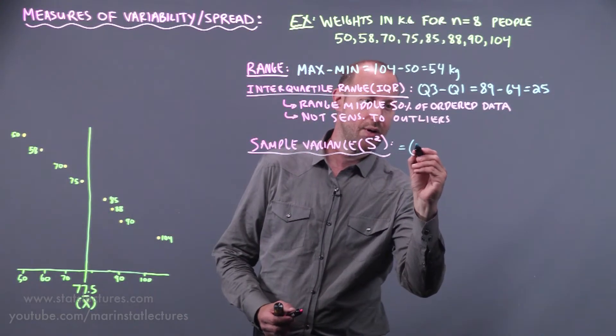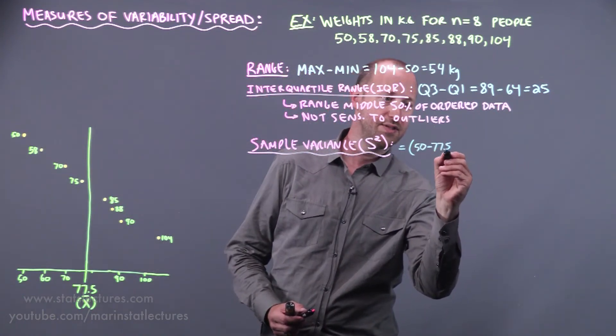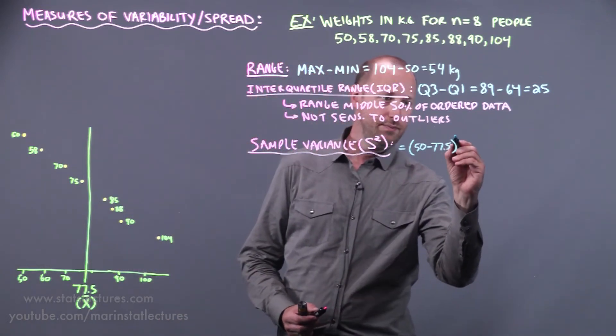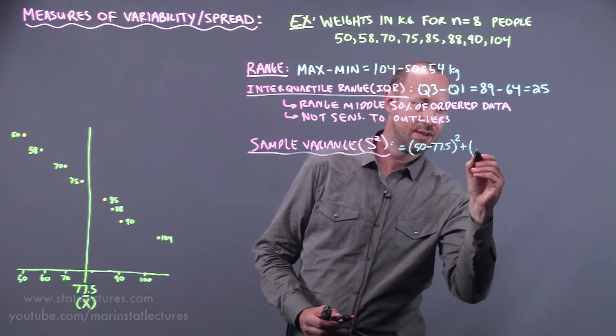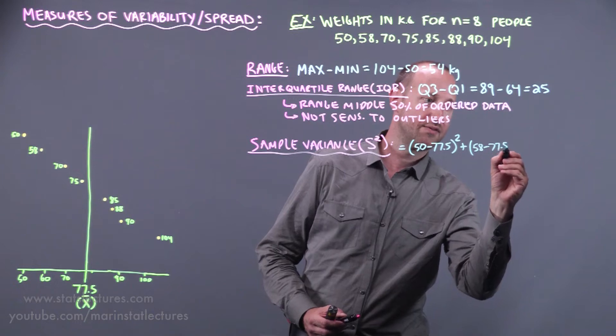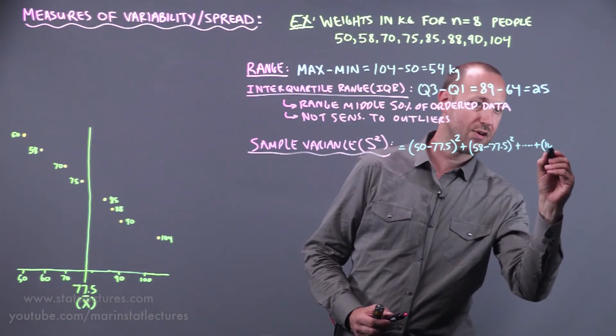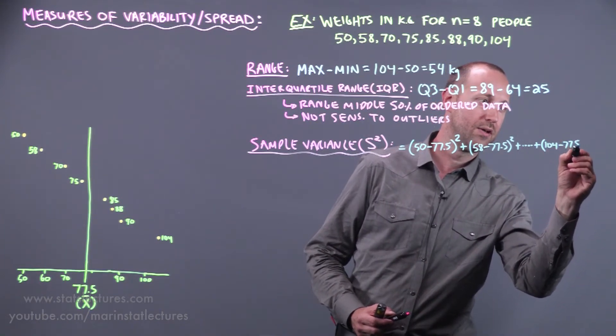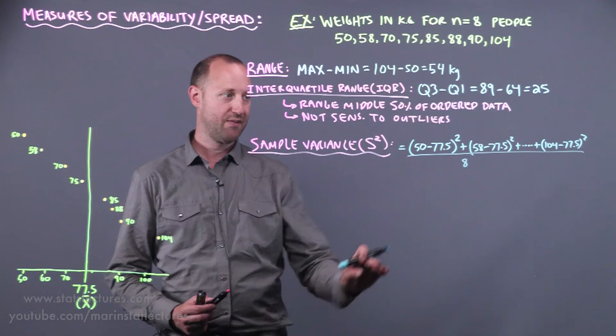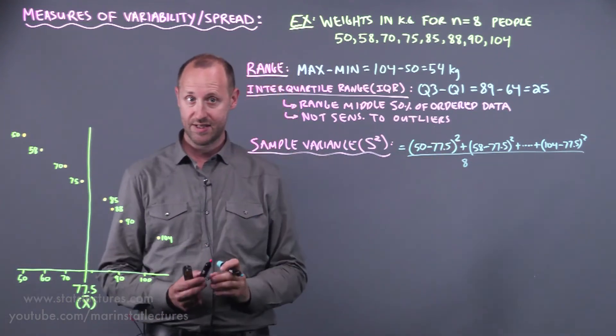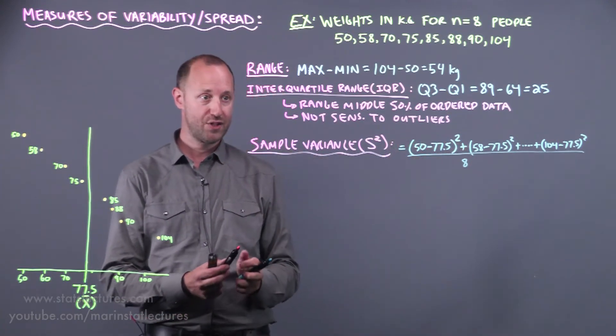We want to think about how far is that first individual's weight of 50 kilograms from the sample mean of 77.5, and we're going to square that. Then we can add to that how far is the second observation from that sample mean of 77.5, all the way up to the last. We'll do this for each one. How far is each individual from that sample mean squared. If we average all of these, this formula is giving us the average of the squared distances or deviations, or the average squared deviation.